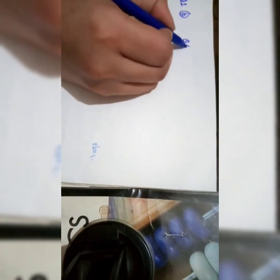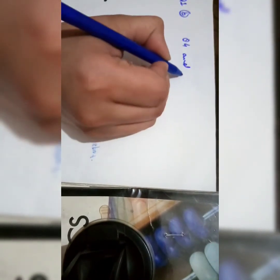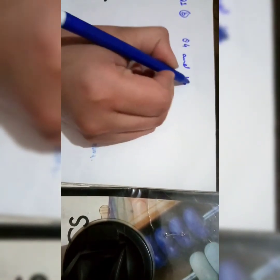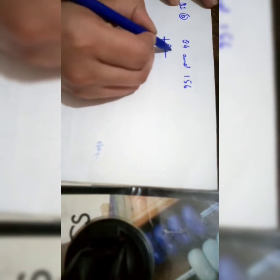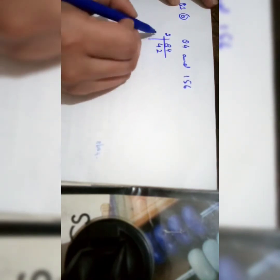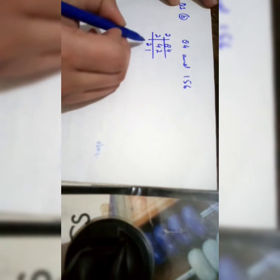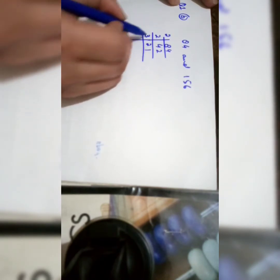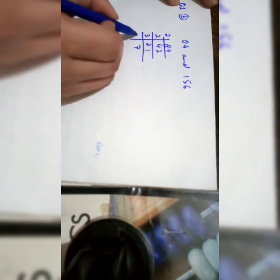Now Part B, Question 1: find the HCF of 84 and 156. First, find the factors of 84. 84 is even so divide by 2: 2 fours are 8, giving 42. Divide 42 by 2 again: 2 twos are 4, giving 21. Now 21 is divisible by 3: 3 sevens are 21, giving 7.